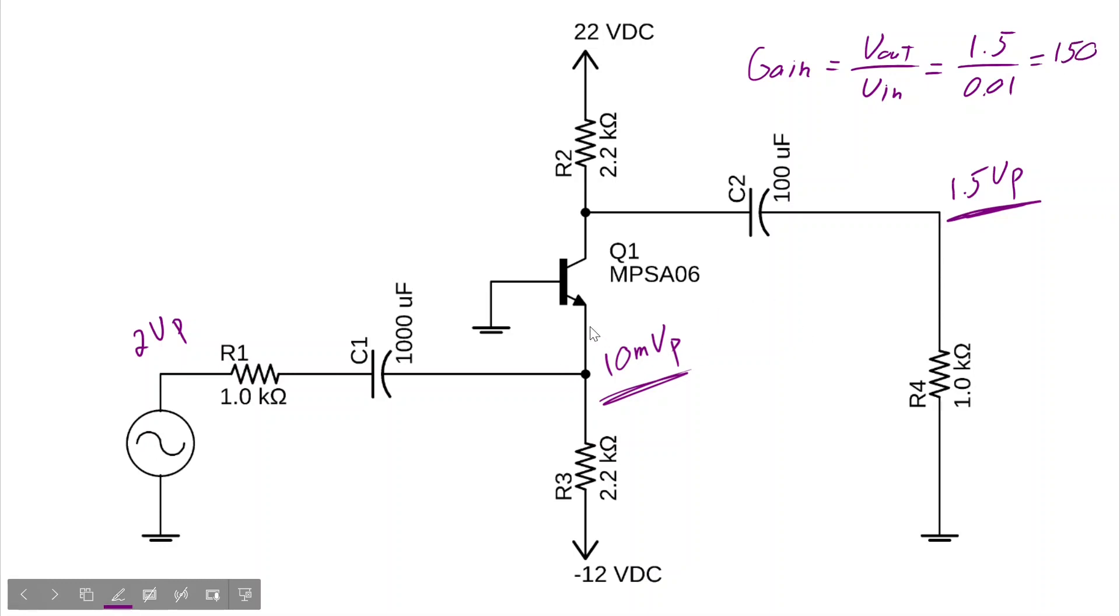Once again, that's looking at the input on the emitter to the output. It's worth noting that this common base amplifier is incredibly difficult to drive. In fact, we can use the voltage divider rule to find out just how difficult it is. So if we were looking here, if we were to look into this amplifier, what would we see?